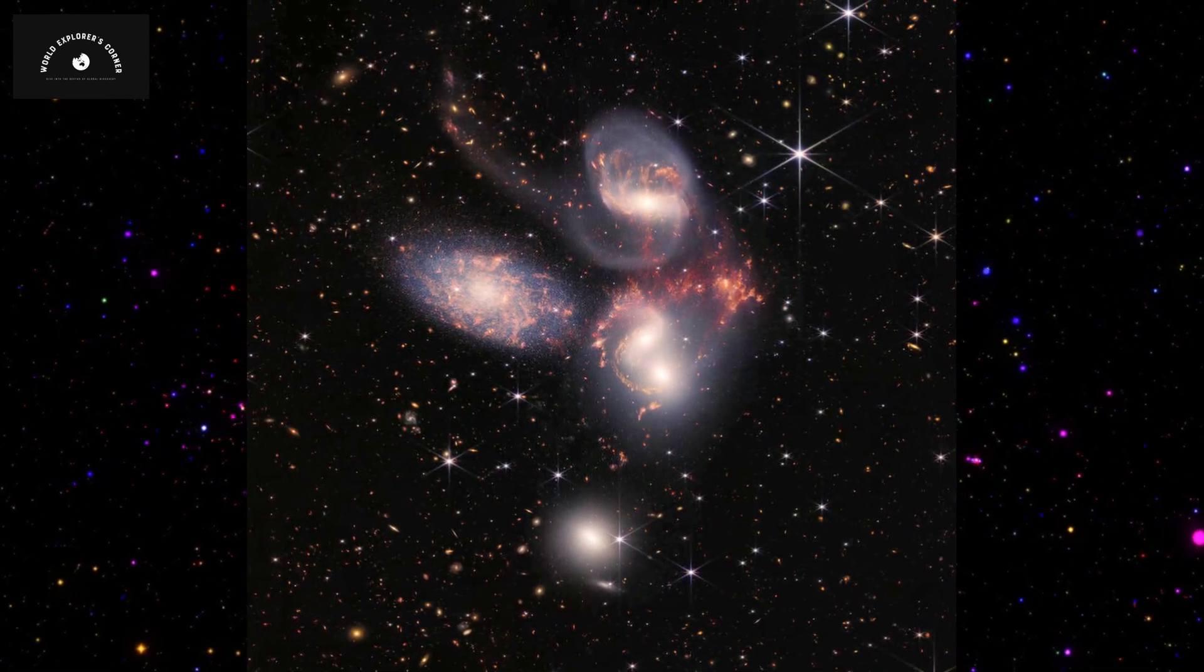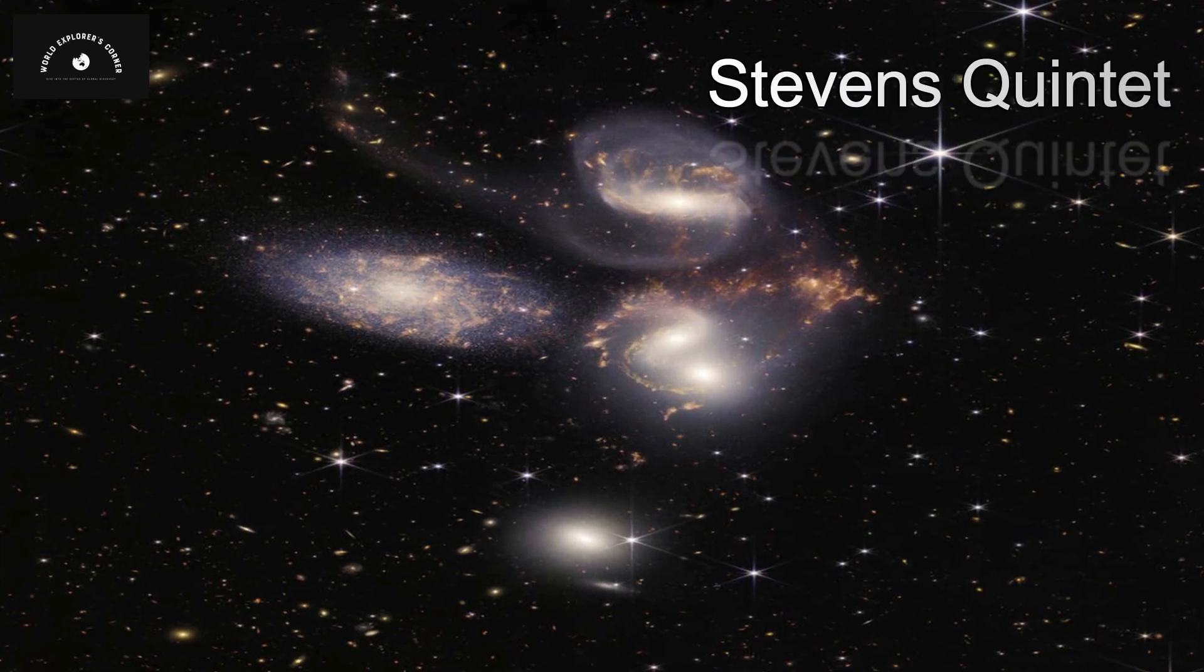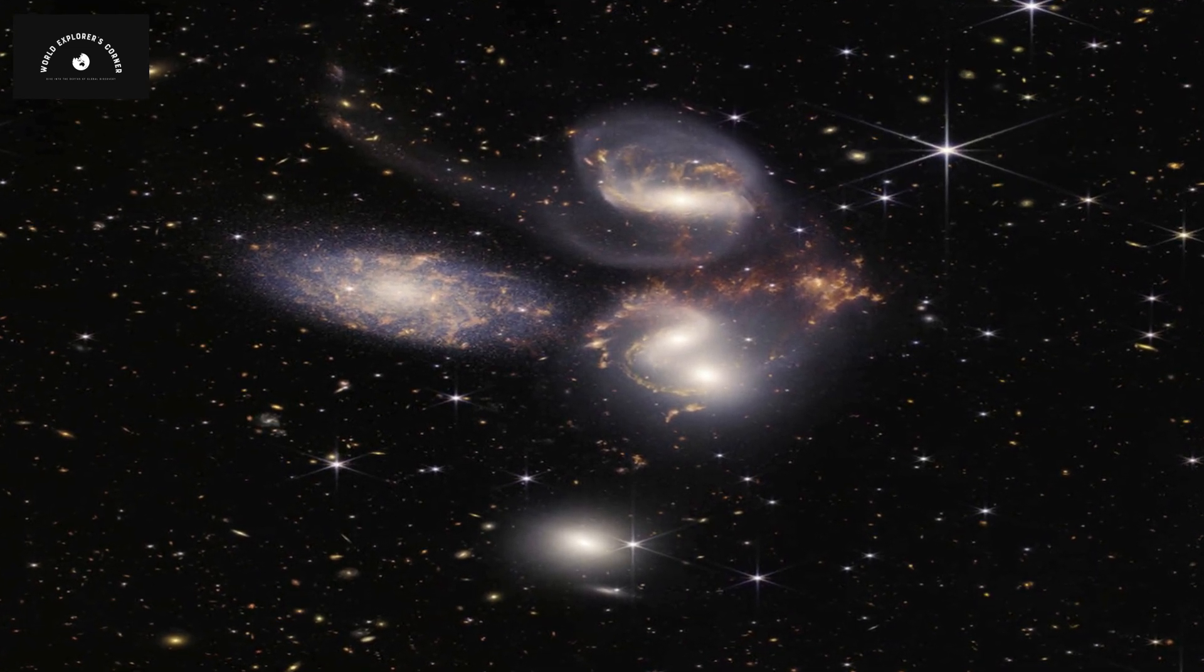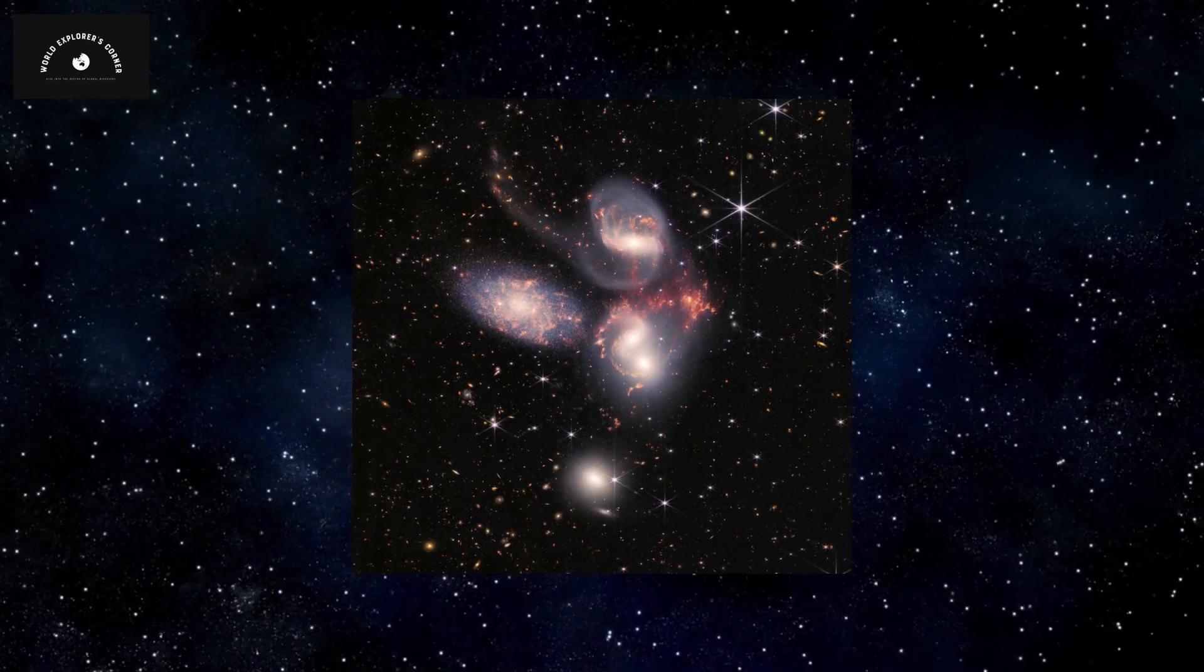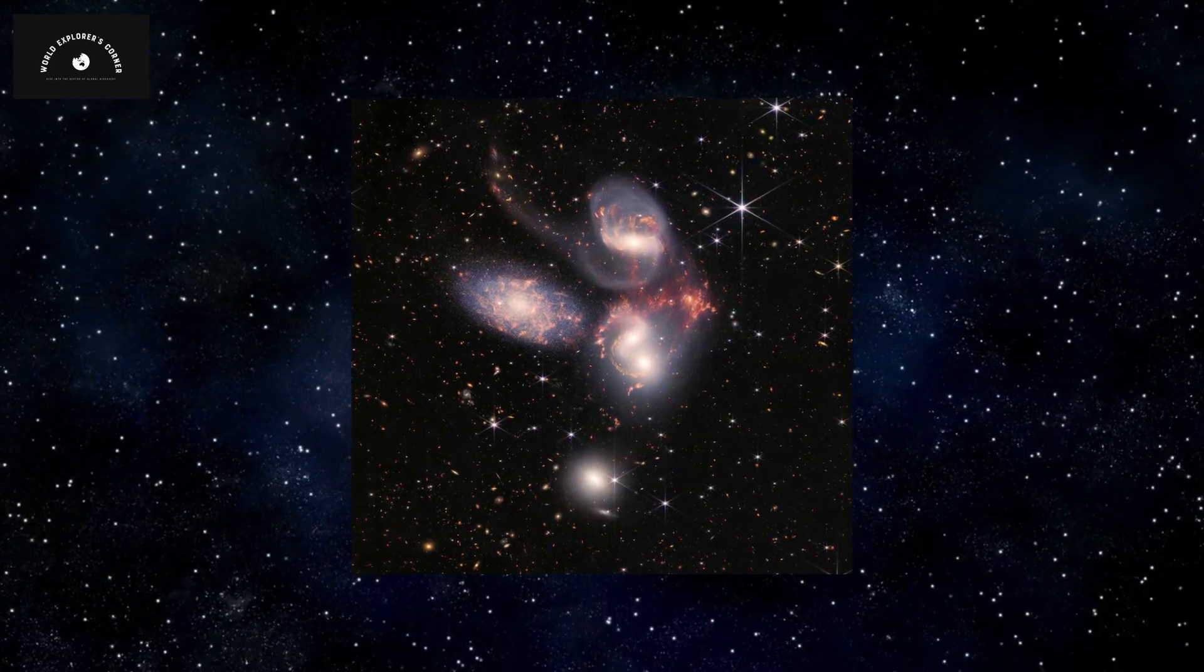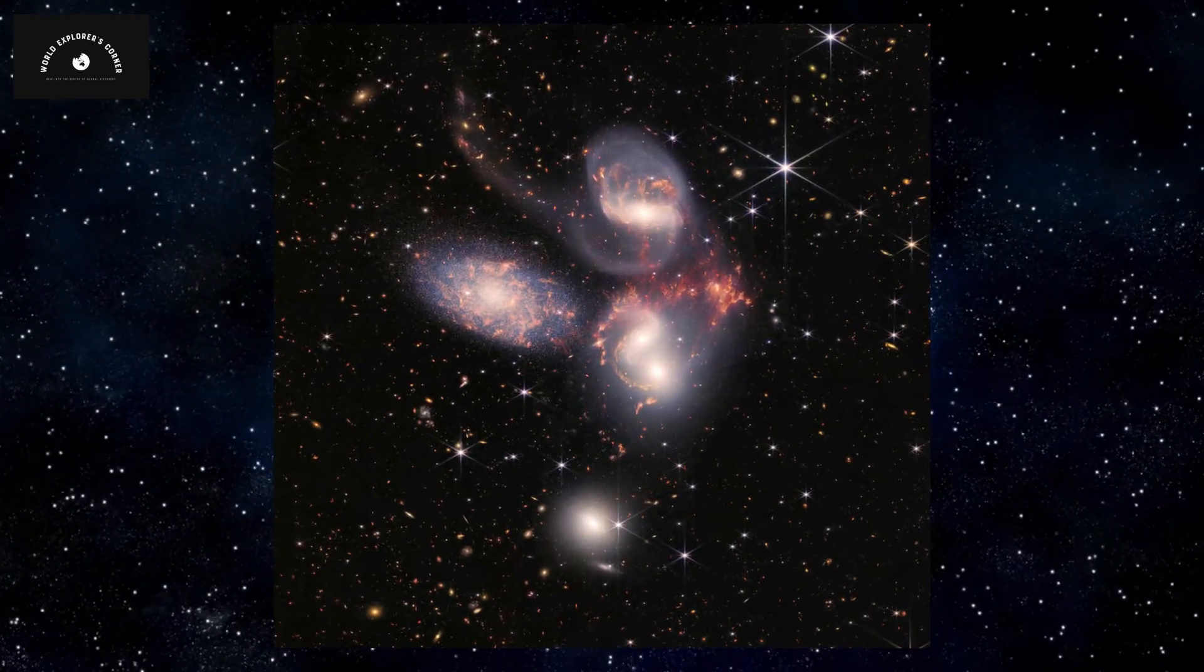In this photo, you can also see a cluster of five galaxies known as the Stephan's Quintet. These five galaxies are rotating at very high speeds and gradually approaching each other. Space astronomers believe that these five galaxies will eventually collide with one another.